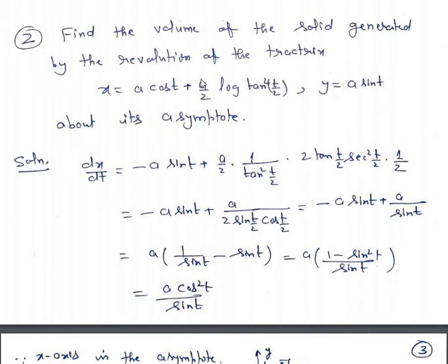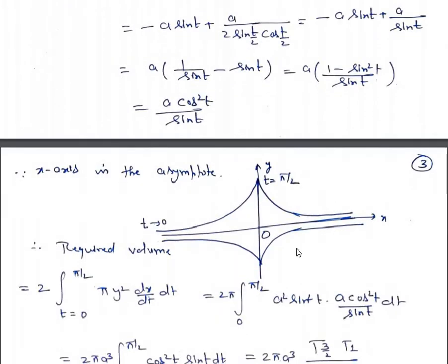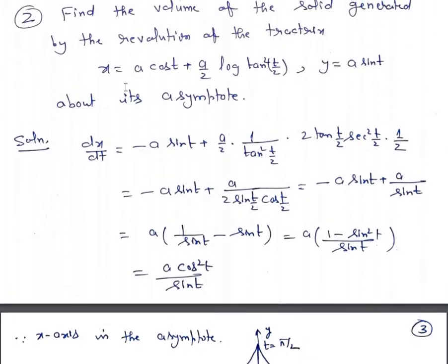We have learned the tracing of this curve. Let's find dx/dt: dx/dt = −a sin t + (a/2)·(1/tan²(t/2))·2tan(t/2)·sec²(t/2)·(1/2), which simplifies to −a sin t + a/(2sin(t/2)cos(t/2)). Since 2sin(t/2)cos(t/2) = sin t, taking a common we get a·(1 − sin²t)/sin t = a·cos²t/sin t.